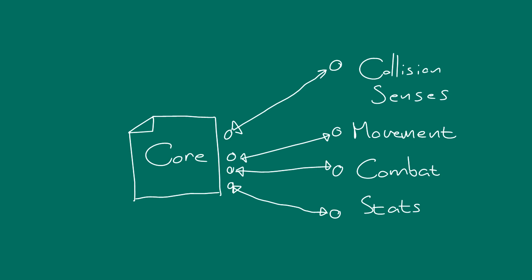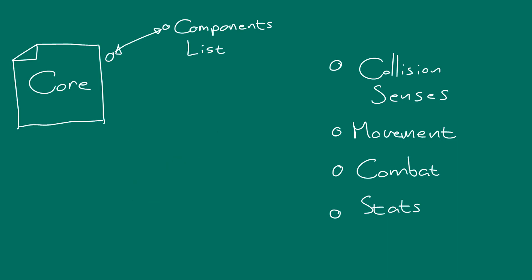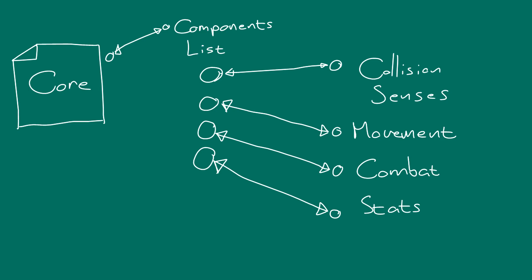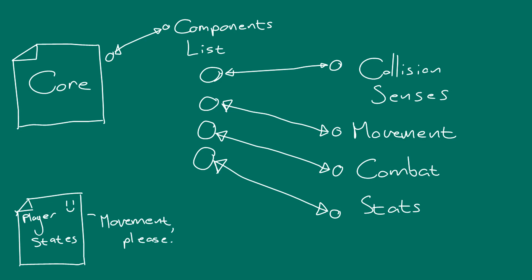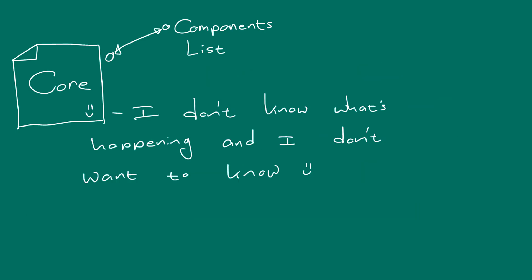To solve this issue we're going to get rid of all the hard-coded core component references our core has and replace it with a list. We can then make the core components add themselves to the list of their parent core. In the core we can then create a function that will find and return a core component from this list when it is needed. Other scripts that make use of certain core components can then call this function and cache the reference to that component, so it's not constantly looking through the list. By doing this the core merely acts as a general hub for the core components.